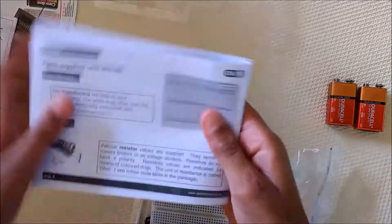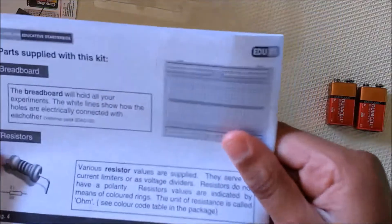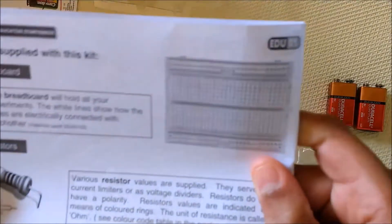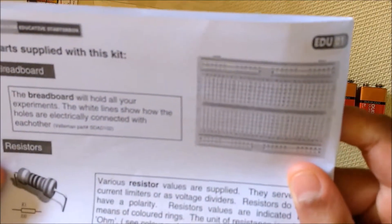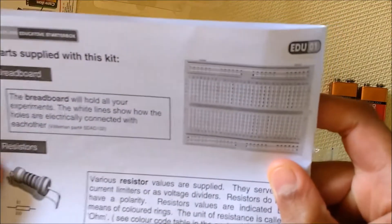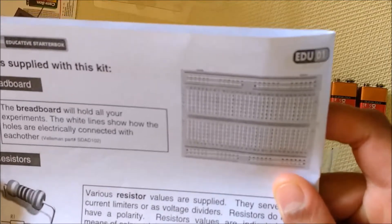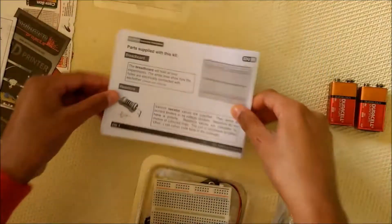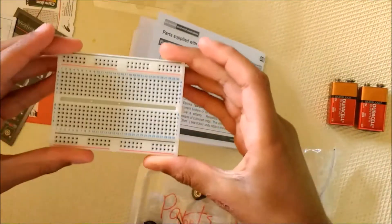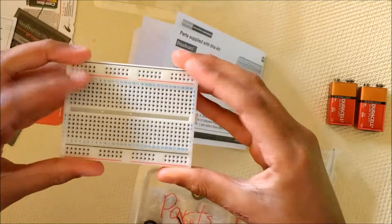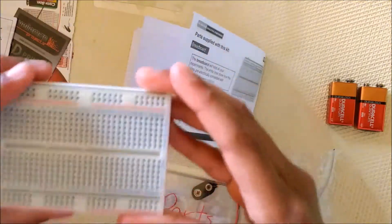The first thing it talks about is the breadboard. The breadboard will hold all your experiments. The white lines show how the holes are electrically connected with each other. So this is the breadboard. I don't put it in any plastic bag or anything, I just keep it like this.